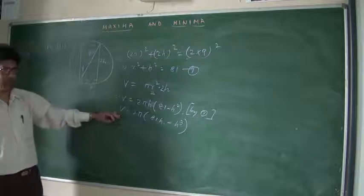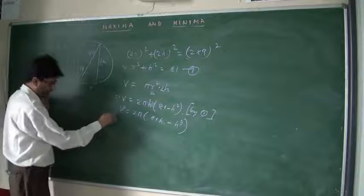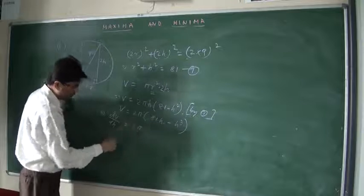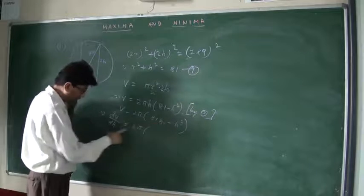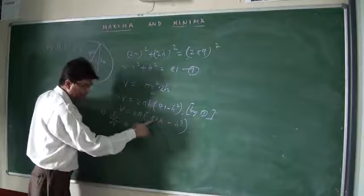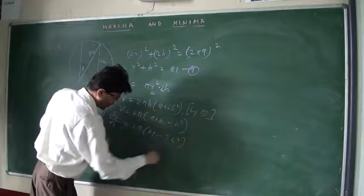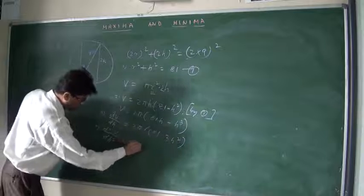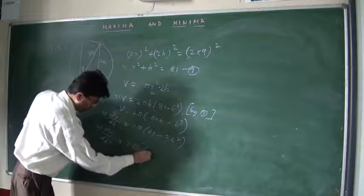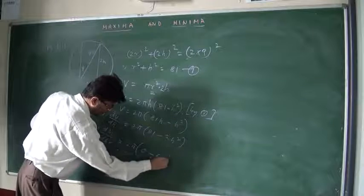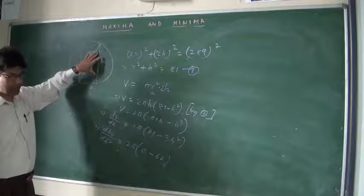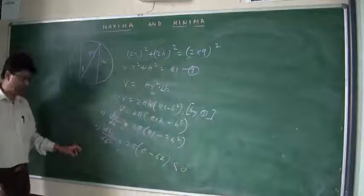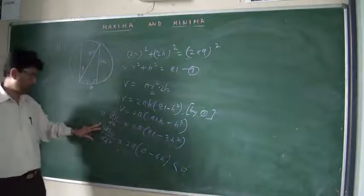When this is maximum, that you have to find out. Let's find the derivative twice. dV/dh = 2π(81 − 3h²). The second derivative d²V/dh² = 2π(−6h). Since height is a positive quantity, minus of a positive quantity is negative, so the second derivative is less than 0. This confirms a maximum.